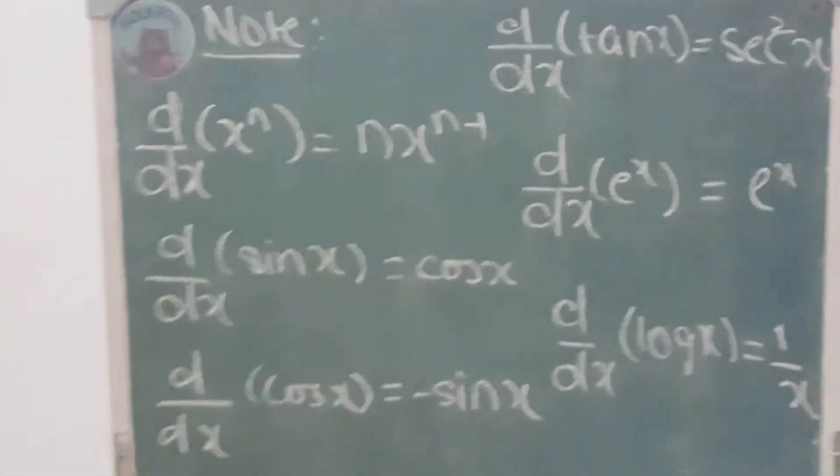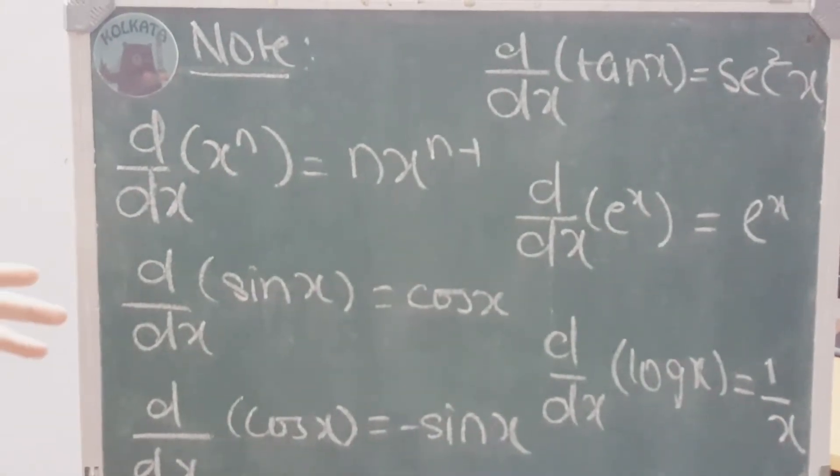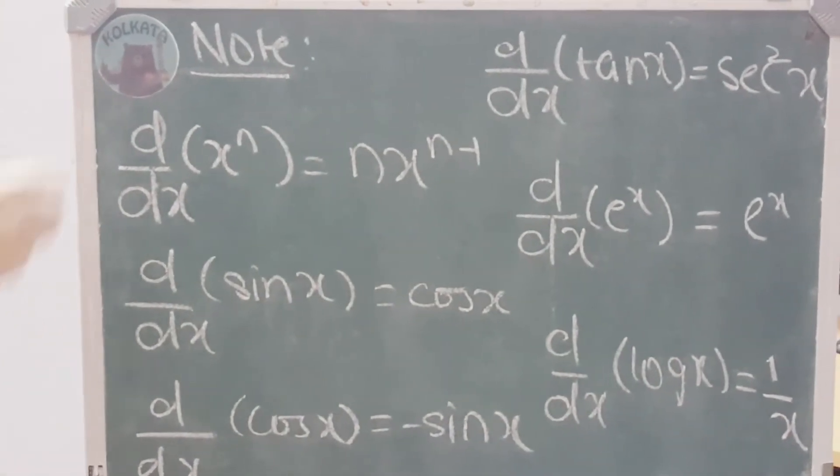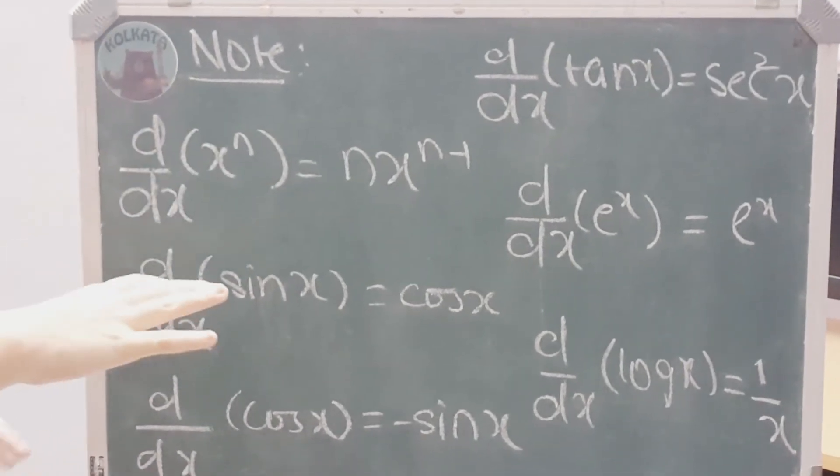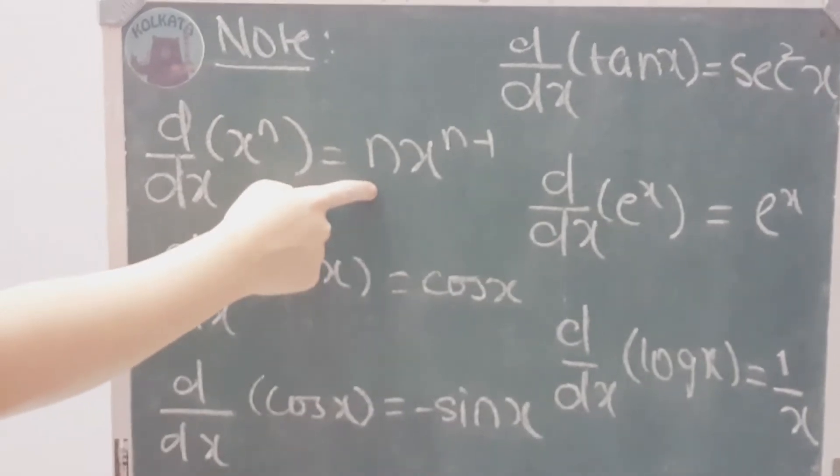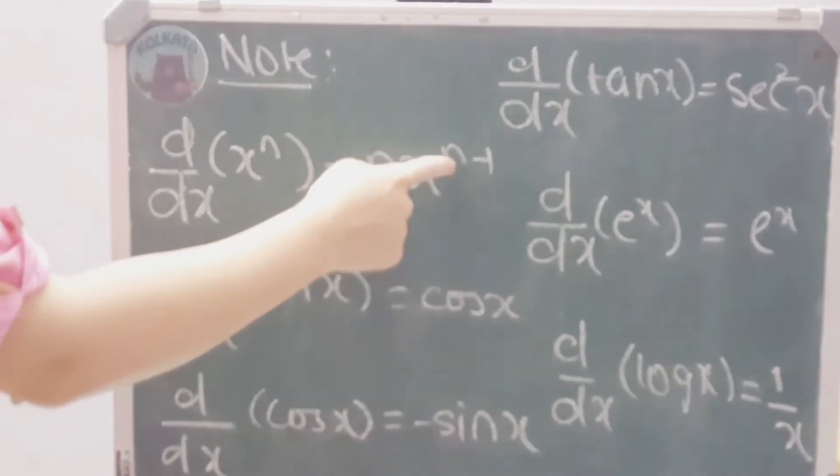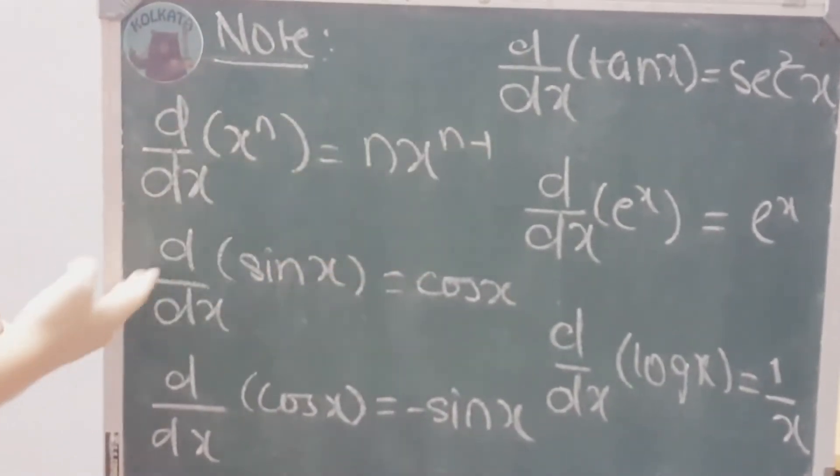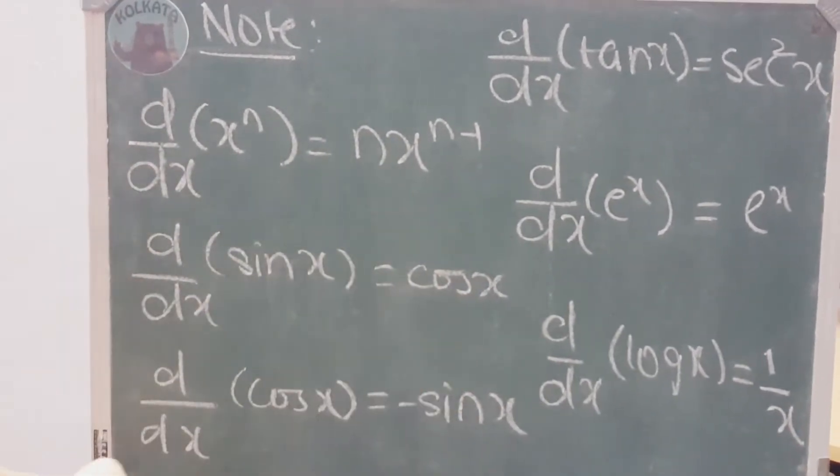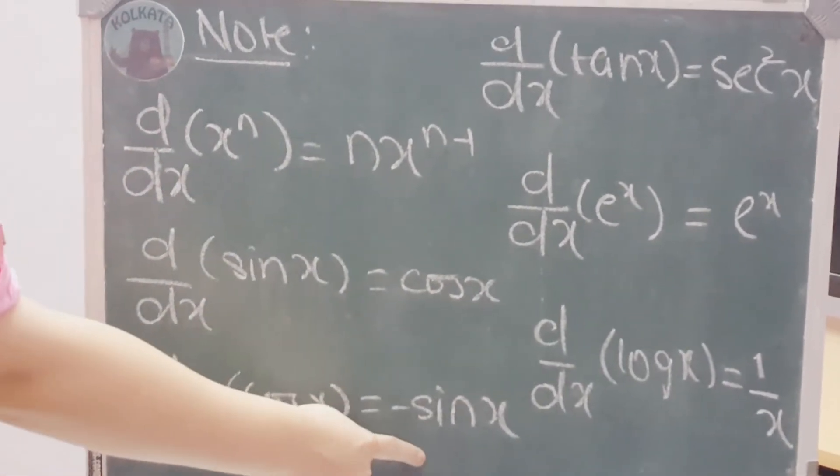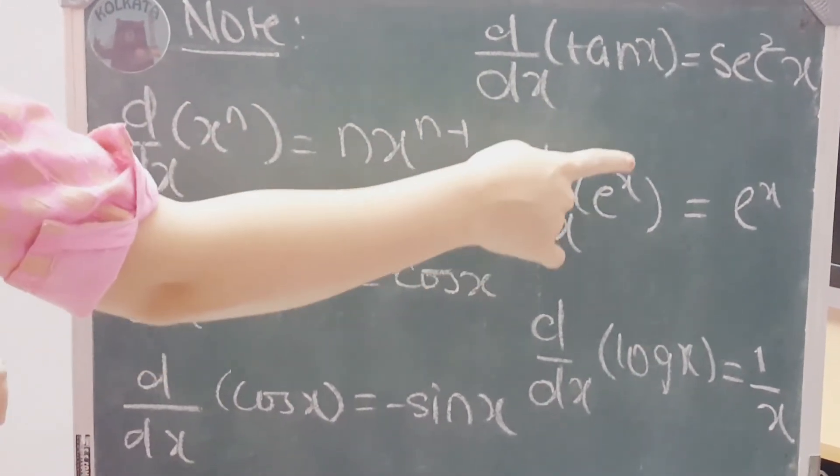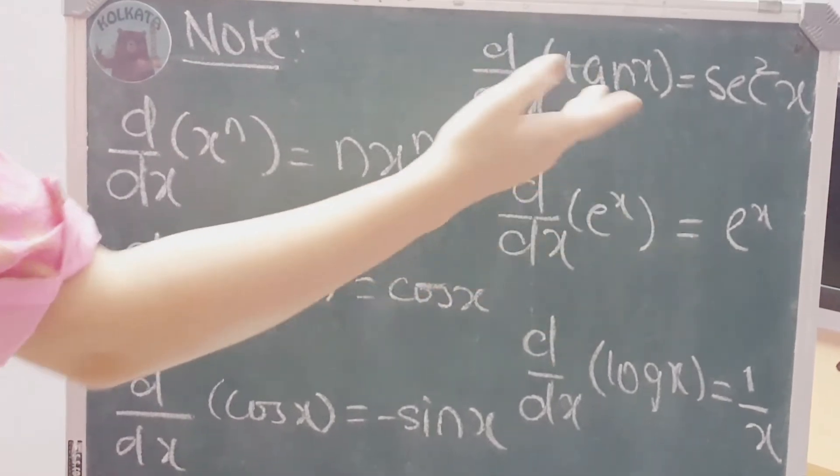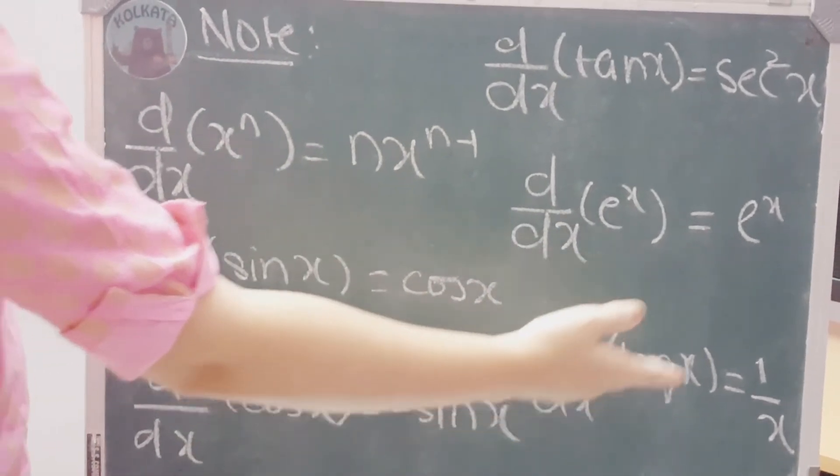These are few very very important formulae that will be used throughout the physics of class 11. So, do note them down for future reference. The derivative of x raised to n, n is any integer or any kind of natural number. So, here you can see it is nx^(n-1). The derivative of sin x is cos x. Derivative of cos x is minus sin x. Derivative of tan x is secant square x. Derivative of e raised to x is e raised to x. And derivative of log x is 1 by x.